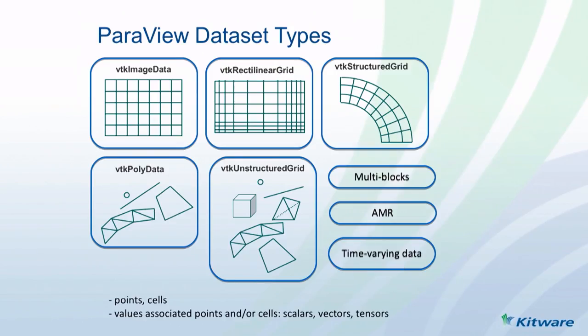These are the types of datasets that VTK and ParaView support — they are optimizations. You could represent everything as an unstructured grid, but everything would run very slowly. You save a lot of memory representing data as image data, which is regular with squares or cubes as cells. You need cells to interpolate between values at the points. Multi-block datasets are separate datasets that may have been produced by different simulation runs that you want to put together, so you can run your visualization pipeline on the whole instead of different pieces.